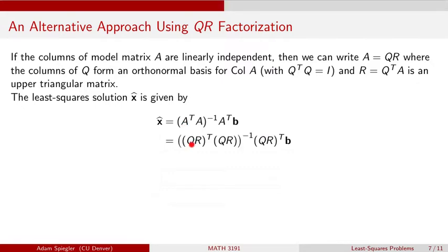So every time I see an A, I'm going to replace it with QR. So I'm going to take QR transpose times QR for this A over here. I'm going to multiply this product and then take the inverse. And then we're going to multiply that by A, which we can replace with QR transpose times B. And now we're going to use some properties of transposes, namely that if I want to take the transpose of a product of two matrices A and B, that's the same thing as taking the product of their transposes in the opposite order. So that's B transpose times A transpose.